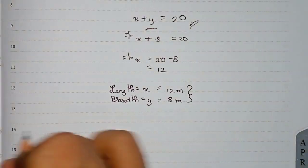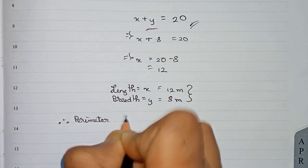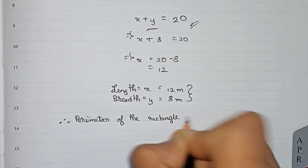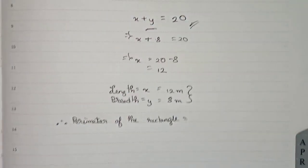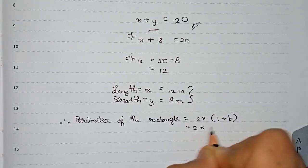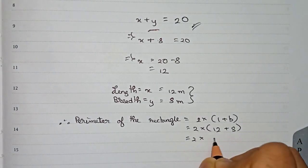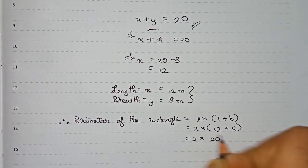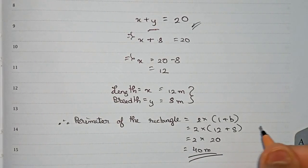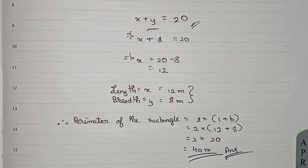From this we can easily calculate the perimeter. The perimeter of a rectangle is equal to 2 × (length + breadth). So perimeter = 2 × (12 + 8) = 2 × 20 = 40 meters. So the perimeter of the rectangle is 40 meters. This is the final answer. Thanks for watching this video — please subscribe to my channel for more solutions like this.